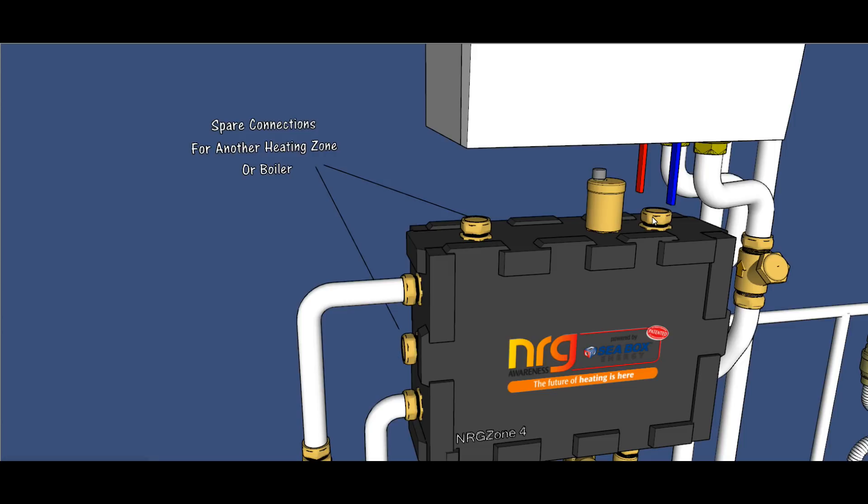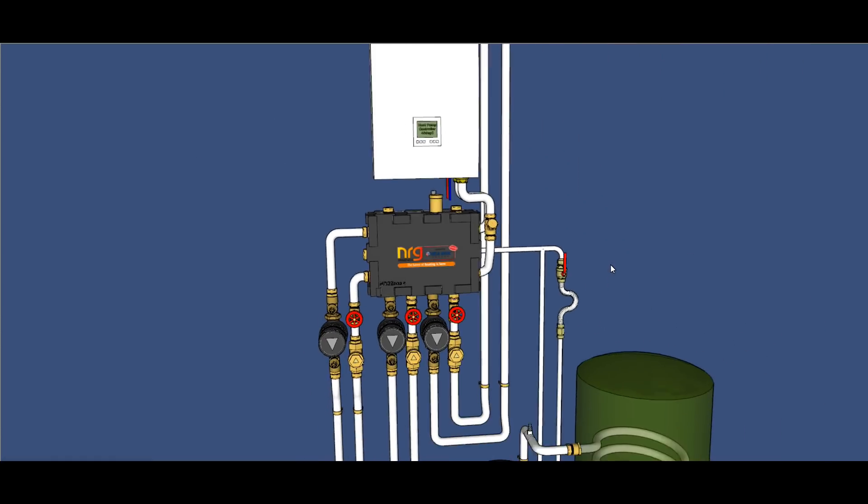The same applies on the other side - you actually still have a port over here and you have a spare port at the side which we'll talk about separately. That means that this unit can actually handle a boiler and up to say five zones, making it a very economical addition to a job.